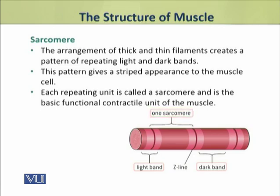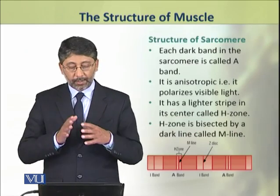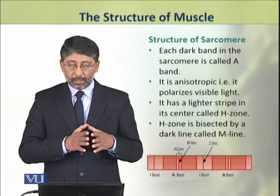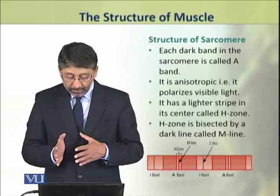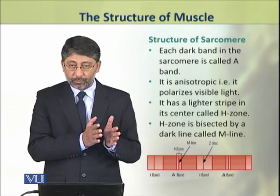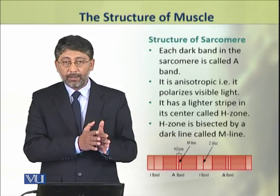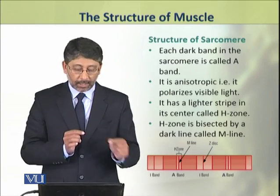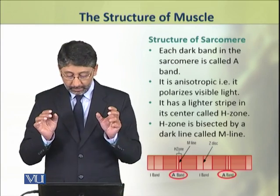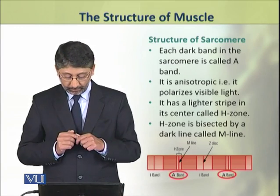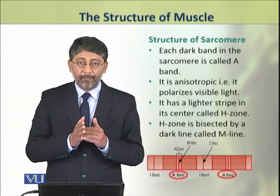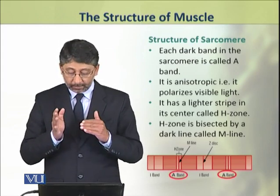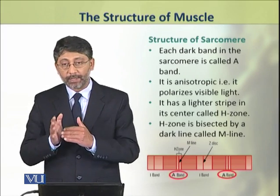Every repeating unit of light and dark band is known as a sarcomere، اور یہ جو sarcomere ہے، this is actually the functional unit of contraction in a muscle. Dear students, now we shall discuss the detail of structure of a sarcomere. ایک sarcomere میں دو طرح کے bands موجود ہیں: dark band and light band. Every dark band in the sarcomere is called the A band.